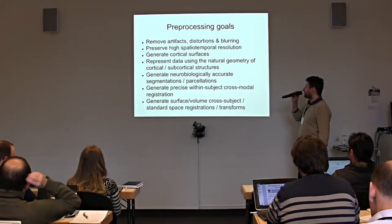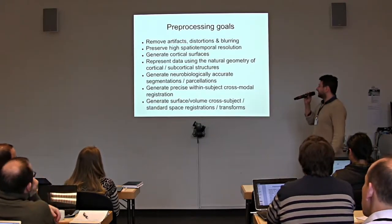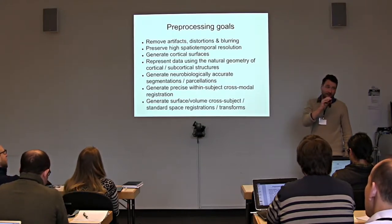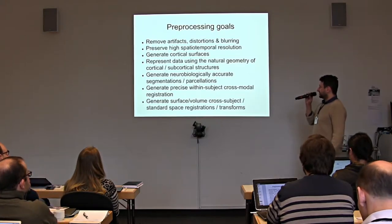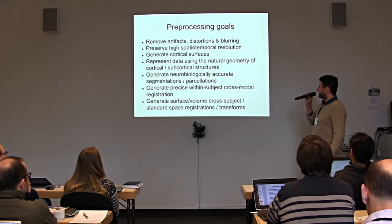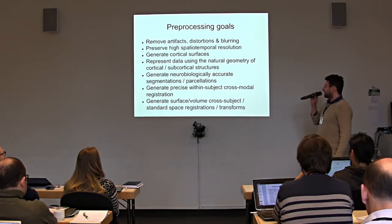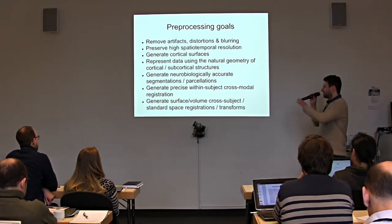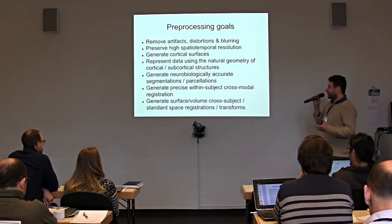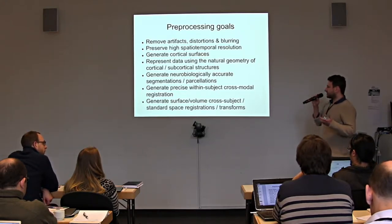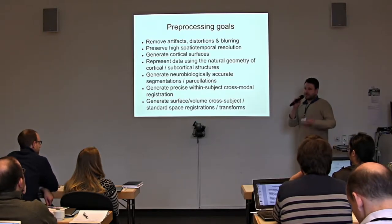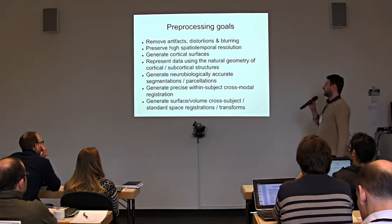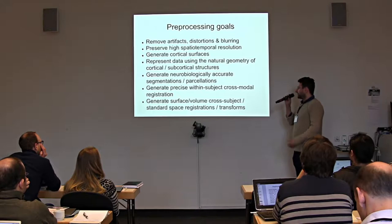The goals of pre-processing: the foremost goal is to remove artifacts — we have a lot of distortions and blurring in MRI and EEG data. At the same time, we want to preserve high spatial and temporal resolution, obtain cortical surfaces, represent data using the natural geometry of the subject for surface simulations, and generate neurobiologically accurate segmentations and parcellations. We need precise within- and between-subject registrations so that a node really represents the function of a specific region and we can compare like with like across subjects.